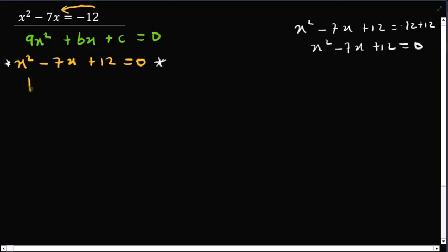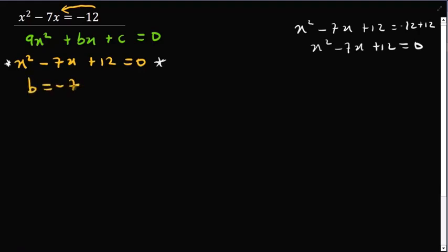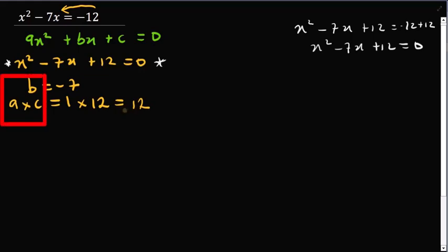Let's identify certain values. The value of b first — our b is negative 7, that is the coefficient of x. Following the rules, the first rule is to identify b, which is our middle term: negative 7. Then the next rule says identify the product of a and c. The coefficient a here is 1, and c is positive 12, so 1 multiplied by 12 gives us a product of 12.